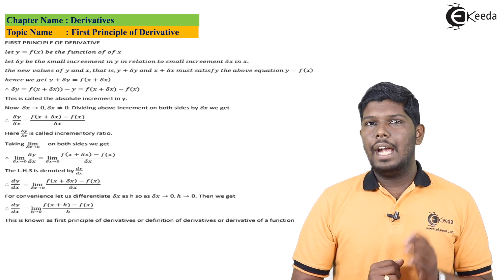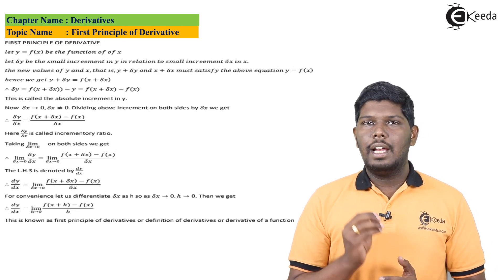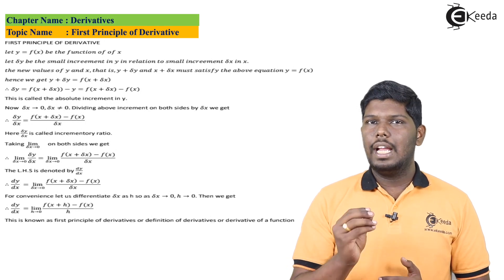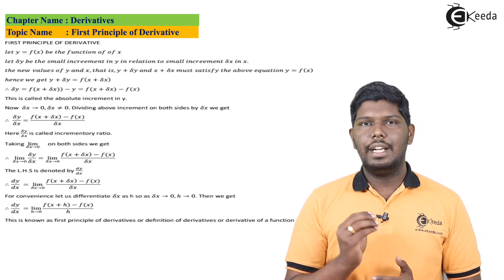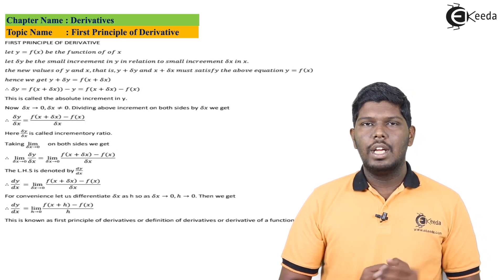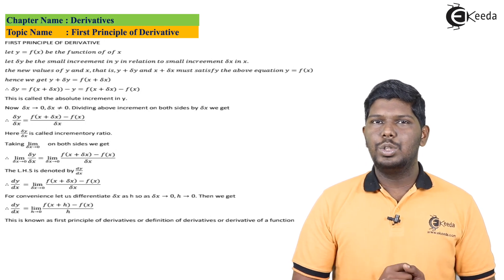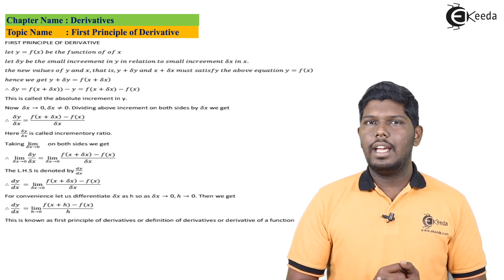In the previous video of introduction we have seen that according to Leibniz, limit del x tending to 0 of del y by del x can be directly written as dy by dx. So it is derivative of y with respect to x. So we have arrived to a point where dy by dx can be written as limit del x tending to 0 of f of x plus del x minus f of x divided by del x.